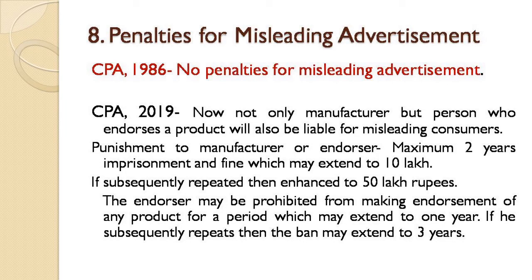The last major change is penalties on misleading advertisements. There was no such provision in the 1986 Act; it was included in 2019. Now not only the manufacturer or seller, but also the endorser who advertises the product is liable if the product quality does not match what was advertised. Many celebrities we admire — we buy their advertised products thinking the product must be good since such a big star endorsed it. Later we may find the product is not good. Under this new act, we can hold not only the manufacturer but also the endorser liable. So now those who advertise must verify whether the product is good before endorsing it, otherwise they too can be held responsible.